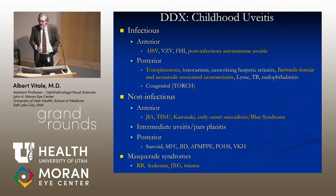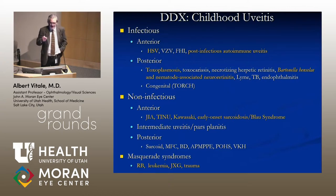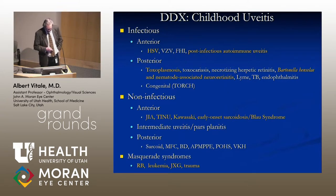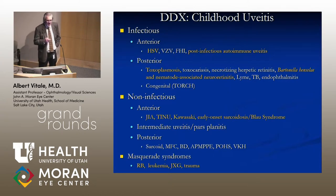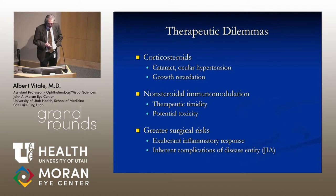The most common infectious etiology in children is toxoplasmosis, as it is in adults. For non-infectious uveitis, JIA-associated uveitis is the most common systemic association in children. There are also unusual syndromes such as Kawasaki's disease, early-onset sarcoidosis, and Blau syndrome. One must not forget that in kids there can be uveitic masquerades such as retinoblastoma presenting as a hypopyon and leukemic infiltration.